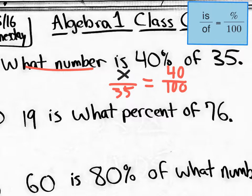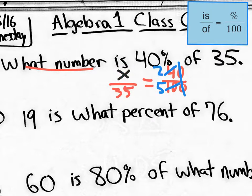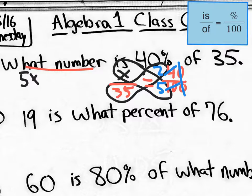We learned how to solve these proportions by cross-multiplying. One suggestion: cancel out zeros to reduce your fraction and make it easier. So 40 over 100 reduces to 4 tenths, and even further to 2 fifths. Now you have x over 35 equals 2 over 5. Cross-multiplying gives 5x equals 35 times 2, which is 70. Dividing both sides by 5 gives x equals 14.